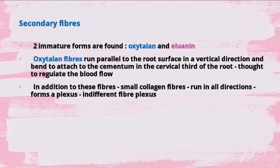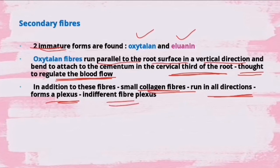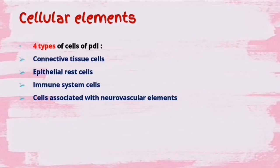Now coming to the secondary fibers. There are two immature forms: oxytalan and eluvane. Oxytalan fibers run parallel to the root surface in a vertical direction and bend to attach to the cementum in the cervical third of the root. They are thought to regulate blood flow. In addition, small collagen fibers running in all directions form a plexus called the indifferent fiber plexus.